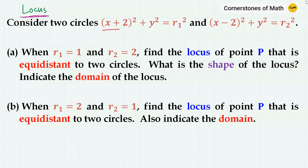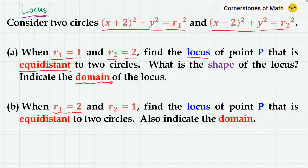Consider two circles: x plus 2 squared plus y squared equals r1 squared, and x minus 2 squared plus y squared equals r2 squared. First, when r1 equals 1 and r2 equals 2, find the locus of point P that is equidistant to two circles. What is the shape of the locus? Also indicate the domain of the locus. For the second problem, r1 equals 2 and r2 equals 1, and we have to find the locus of point P that is equidistant to two circles, and also indicate the domain of the locus.